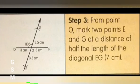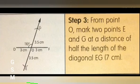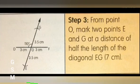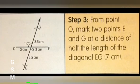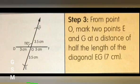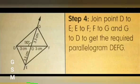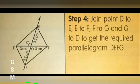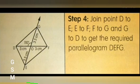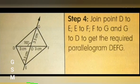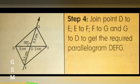Step 3: From point O, mark two points E and G at a distance of half the length of diagonal EG, which is 7 cm (i.e., 3.5 cm each side). Step 4: Join point D to E, E to F, F to G, and G to D to get the required parallelogram DEFG.